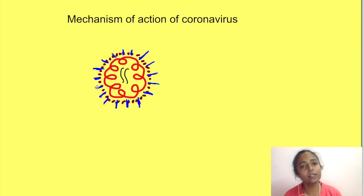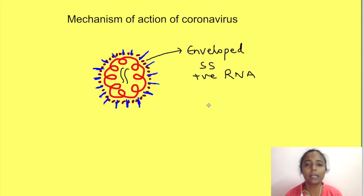This diagram shows the structure of coronavirus. It is an enveloped single-stranded positive strand RNA virus with a helical protein coat. The lipoprotein envelope has three important proteins: S protein (spike protein), M (membrane protein), and E (envelope protein).